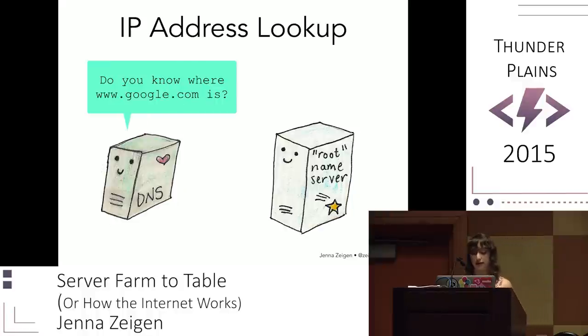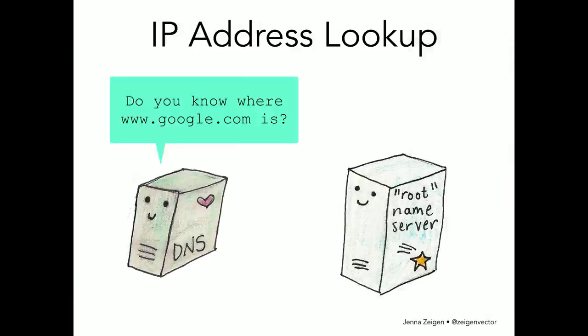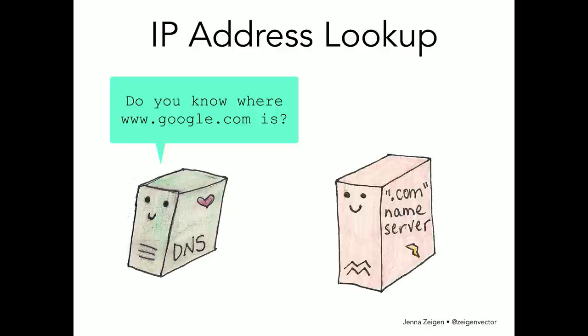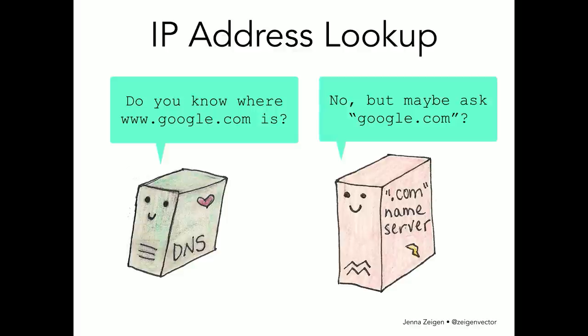The DNS server is going to connect to the root name server and say, 'Do you know where www.google.com is?' The root name server is probably going to say, 'No, I don't really know, but you should probably go ask .com.' Then the DNS server goes to .com and says, 'Do you know where www.google.com is?' And .com is probably going to say, 'No, I don't really know, but you should probably go ask google.com.'